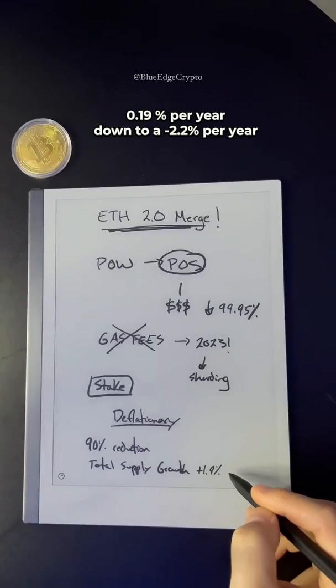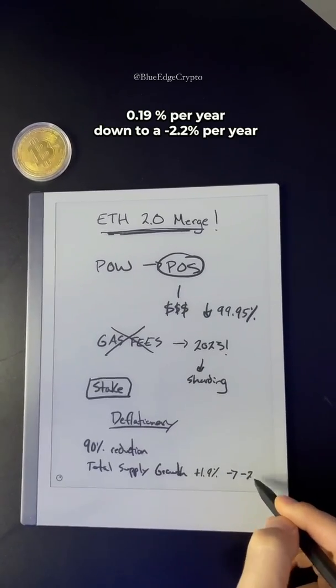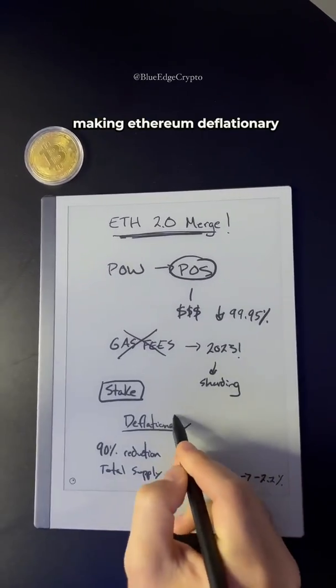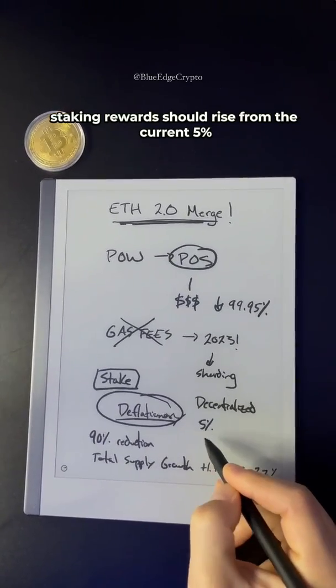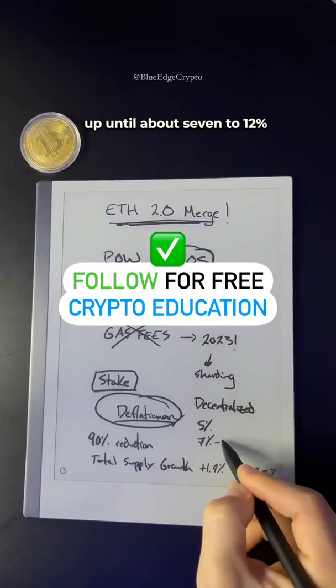Total supply growth of ETH should go from a currently positive 0.19% per year down to a negative 2.2% per year, making Ethereum deflationary. Ethereum should become even further decentralized. Staking rewards should rise from the current 5% up to about 7 to 12%.